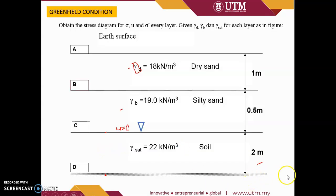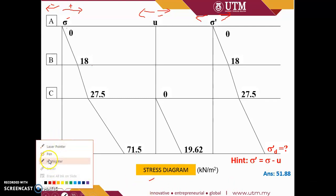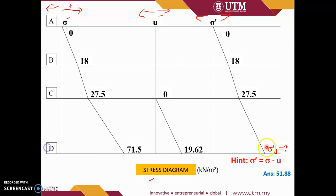I believe you still remember last time we already went through this example and I hope you already obtained the results. For the stress at D, stress at layer D at a depth of 1 plus 0.5 plus 2 — that is 3.5 meters below the ground surface.